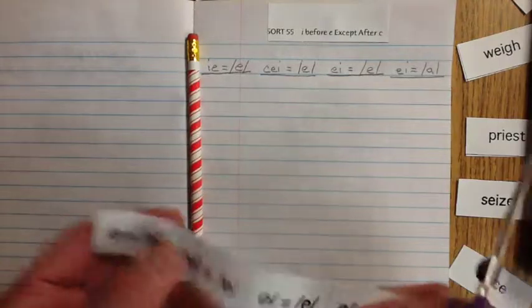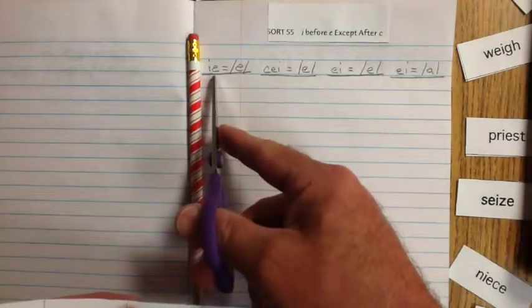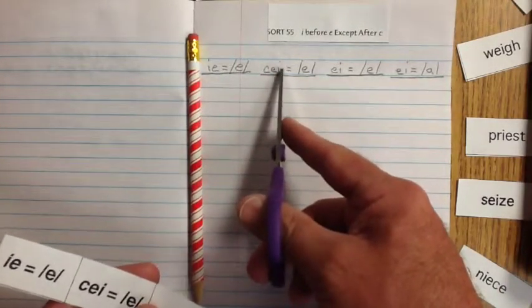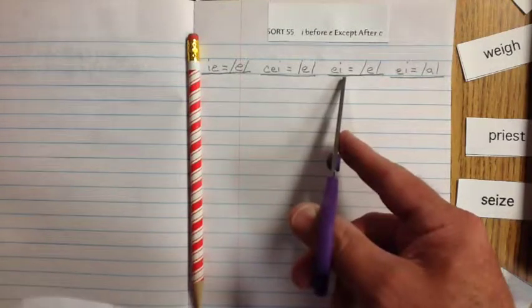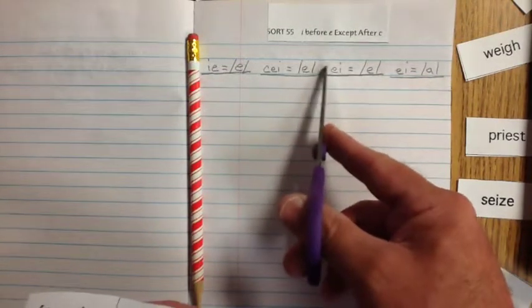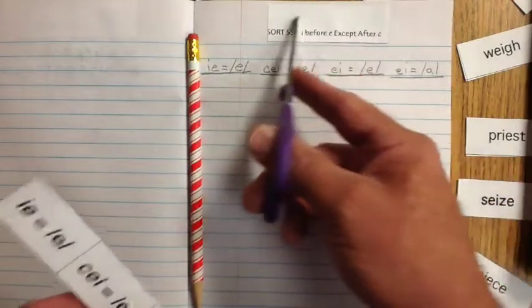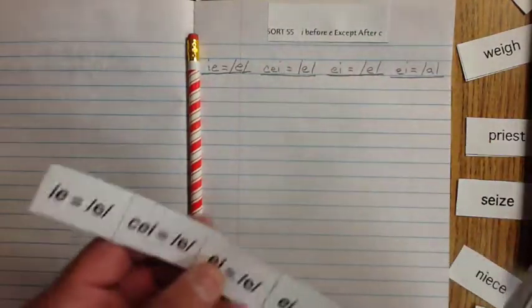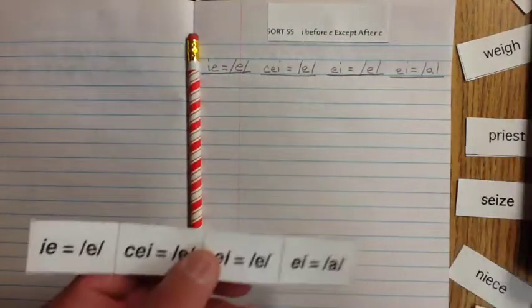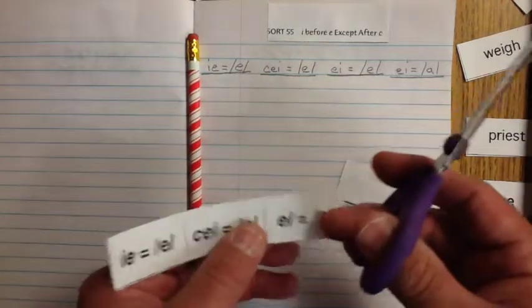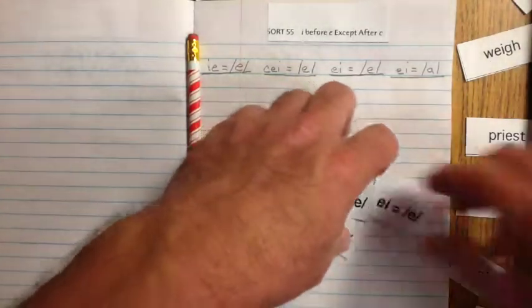And this is where that I before E except after C. Look, there's an I before E. There's the I before E except after C. Then you change them. IE changes to CEI. But look, there's an EI also. There's no C before that. And this one's got an EI, and there's no C after that. So this is not really a true rule. It does not go for everything, but it's a good guide. So if you do this rule on almost everything, it will still be okay.